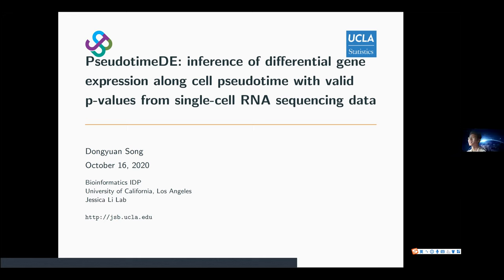Thanks, Jessica. Hello, everyone. I'm Dongyuan, and today I will talk about the newly proposed method, sctime-DE, which is a method for detecting differentially expressed genes and generating valid p-values for single-cell RNA-seq sequencing data.